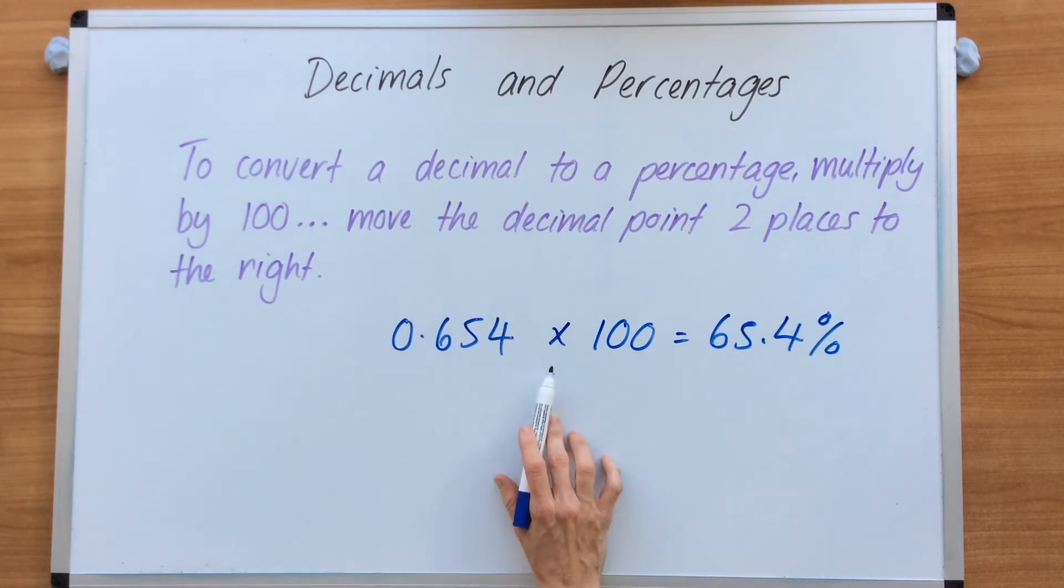You can do that with a calculator easily. But if you want to do it without a calculator, we start from 0.654.